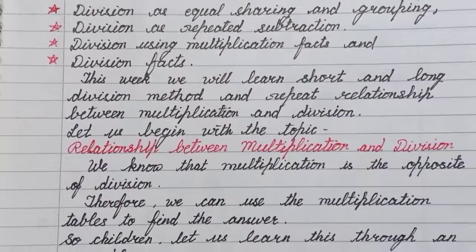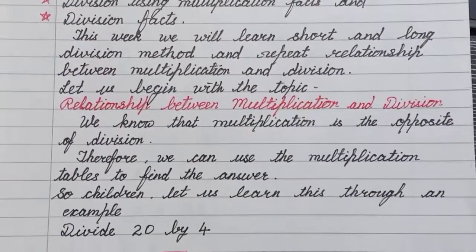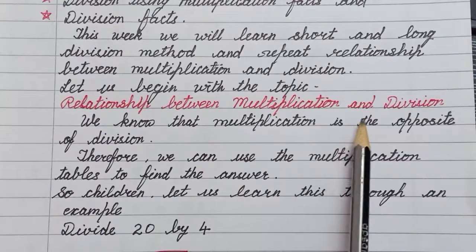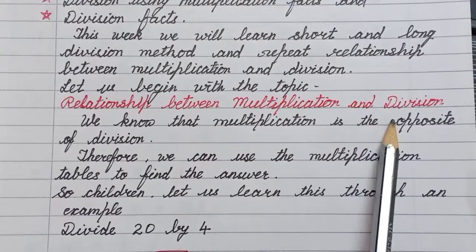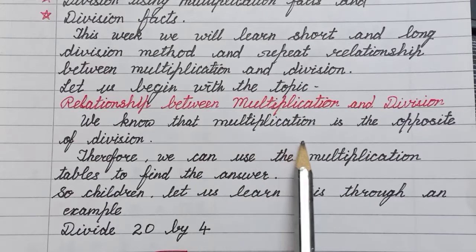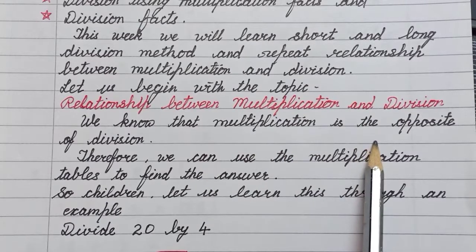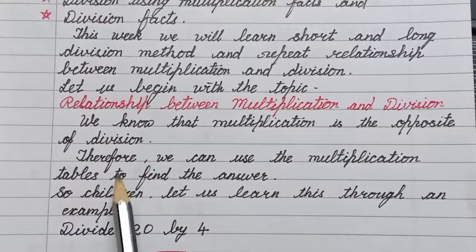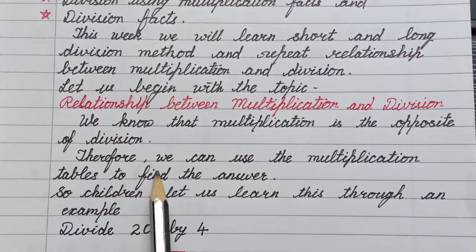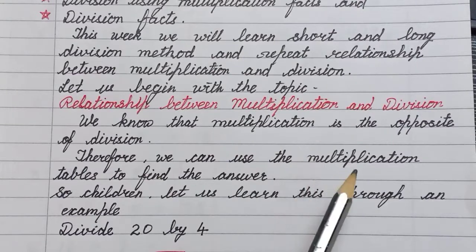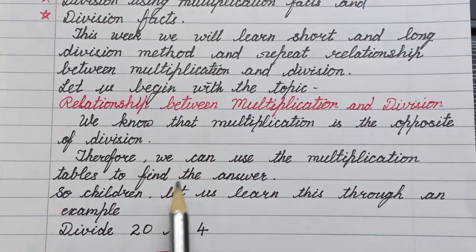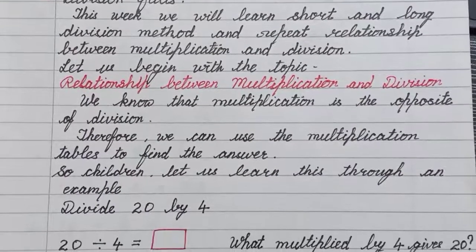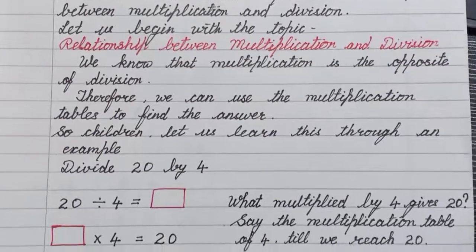We begin with the topic: relationship between multiplication and division. We know that multiplication is the opposite of division. Therefore, we can use the multiplication tables to find the answer. So children, let us learn this through an example.